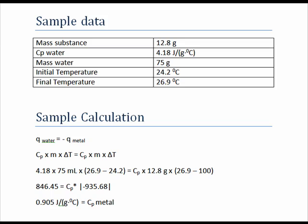In the mathematics, we plug in the numbers of 4.18 for the specific heat of water, multiplied by the 75 milliliters of water or 75 grams, and then we take the temperature difference for the water, and we set that equal to the specific heat of the metal we're solving for.